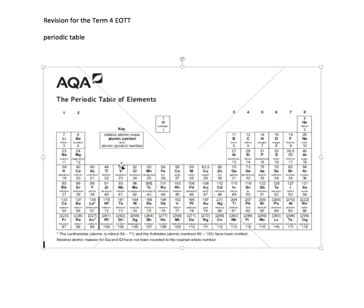Looking at the pattern of reactivity: group 1 elements want to lose 1 electron from the outer shell, and that electron is held in place by the attraction of the nucleus. As you go down group 1, the atomic numbers increase — 3, 11, 19 — so you're getting more and more shells of electrons. The outer electron in francium is quite far from the nucleus compared to lithium, so it's very easy to lose, making francium extremely reactive. The reactivity increases as you go down group 1.